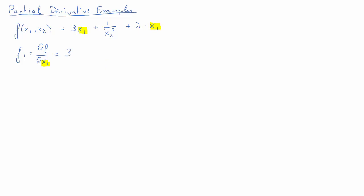Looking at that first term, 3x1, the derivative of that is just 3. The second term doesn't have our variable x1, so it would just contribute a zero to the derivative, and then we just get a lambda from lambda times x1.